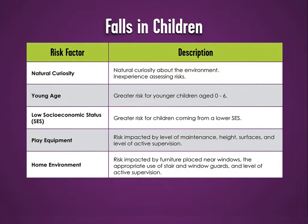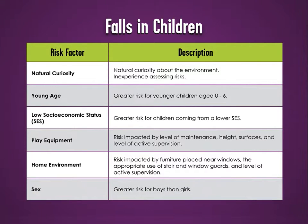Home environment also poses risks for children. Risks in the home include furniture placed in close proximity to windows, the appropriate use of stair and window guards, and the level of active supervision. Finally, sex of a child is a risk factor, with research suggesting that boys have a greater risk than girls.